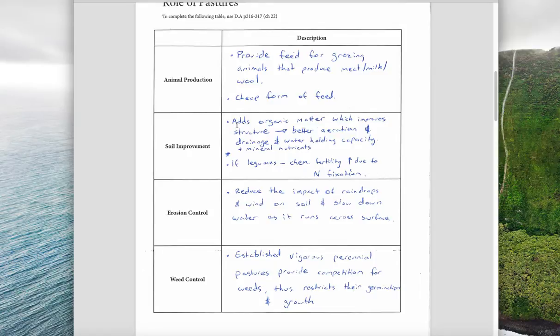Pastures also help with soil improvement. They add organic matter - the more pasture growing, the more organic matter. They help with aeration and drainage and water holding capacity. If they're legumes they also increase the chemical fertility or the nitrogen level in the soil.